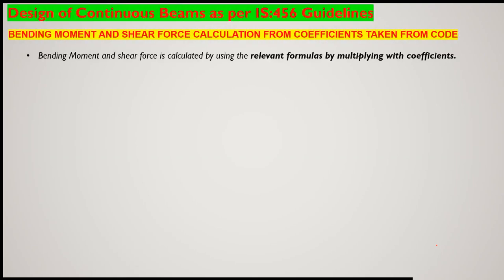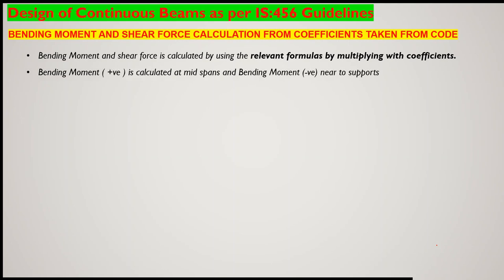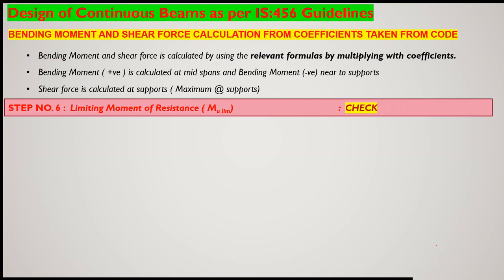To summarize step number five: bending moment and shear force are calculated using the relevant formula by multiplying the coefficient from Tables 12 and 13. Positive bending moment is at mid-span, negative bending moment is at supports, and maximum shear force is calculated at supports from Table 13.